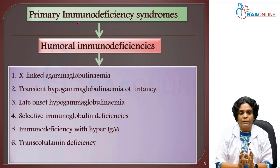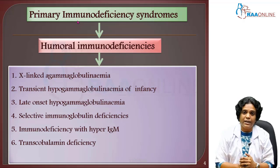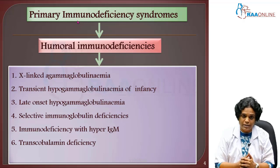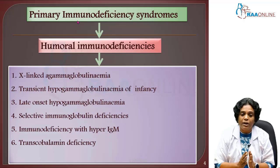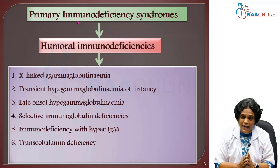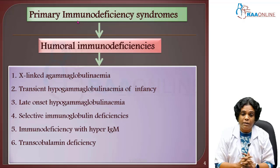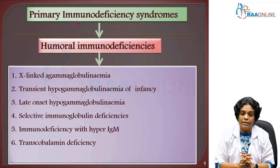Coming to the primary immunodeficiency syndromes, the first category is humoral immunodeficiencies, under which there are six disorders. The first is X-linked agammaglobulinemia, which is very common in males. There will be a reduction in immunoglobulins, or sometimes immunoglobulins will be absent entirely.